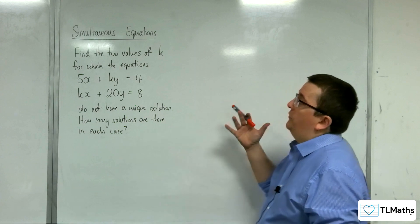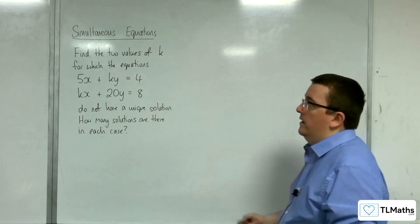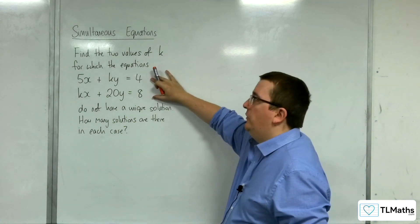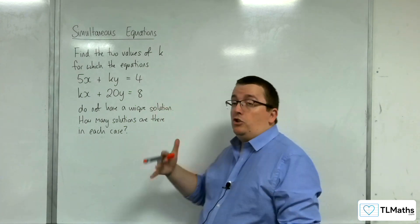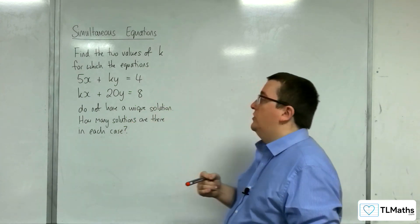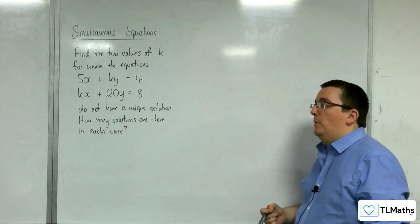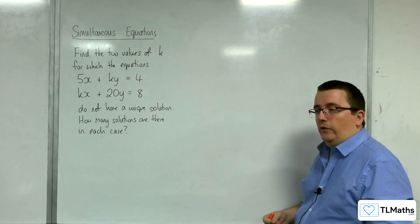So in this problem, we have to find the two values of k for which these simultaneous equations do not have a unique solution. And for each of those values of k, we need to say how many solutions there would actually be in each of those cases.